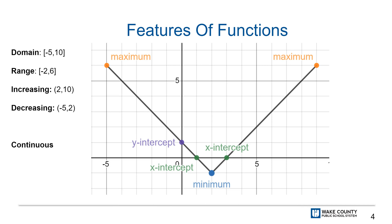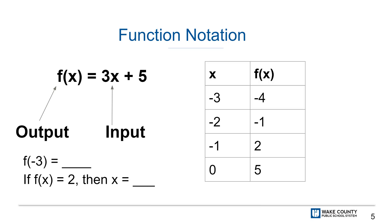At this point you may not understand how to determine these key features, but you can begin to think about what these terms mean. In units 1 and 2 you wrote functions and function notation, but now we will dig deeper into understanding the concept of inputs and outputs and how they relate to the context of a function.